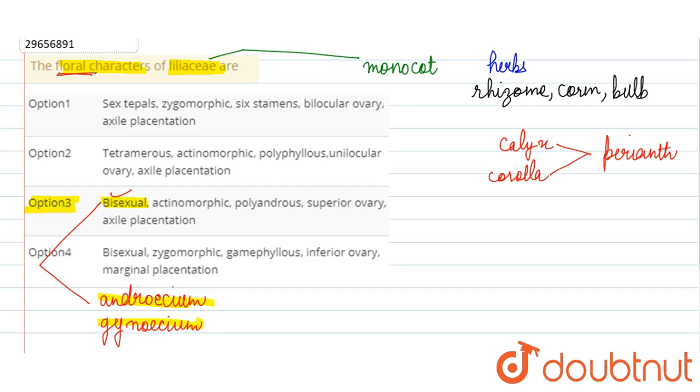Then, actinomorphic. What does this mean for the flower? The flower has radial type of symmetry. This means we can take a plane from the center and divide it into two identical radial halves. We get this same symmetry in the Liliaceae family.